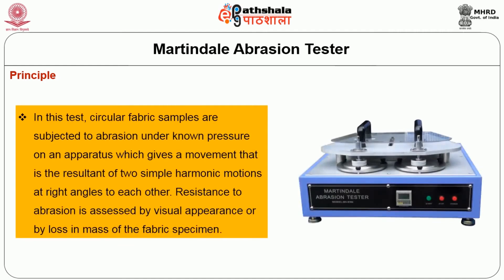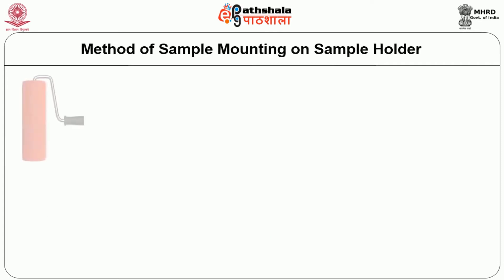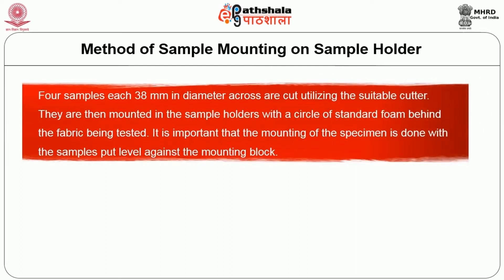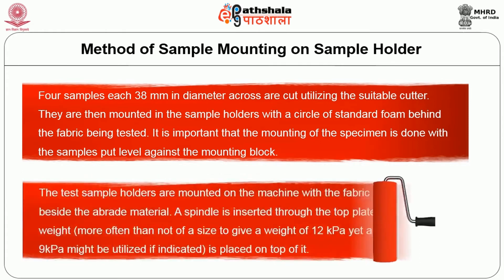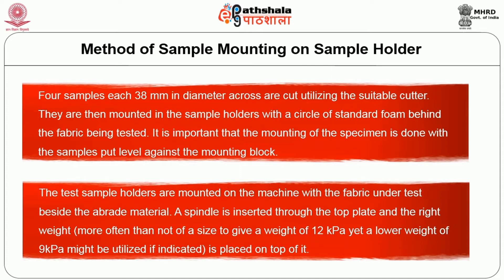The principle of the Martindale tester: circular fabric samples are subjected to abrasion under known pressure on the Martindale apparatus, which gives a movement that is a resultant of two simple harmonic motions at right angles to each other. Resistance to abrasion is assessed by visual appearance or by loss in mass of the fabric specimen. For mounting: four samples each 38 mm in diameter are cut using a suitable cutter and mounted in sample holders with a circle of standard foam behind the fabric. The test sample holders are mounted on the machine with the fabric under test against the abradant material. A spindle is inserted through the top plate with the appropriate weight — typically 12 kPa, though 9 kPa can also be used for specific fabric types.